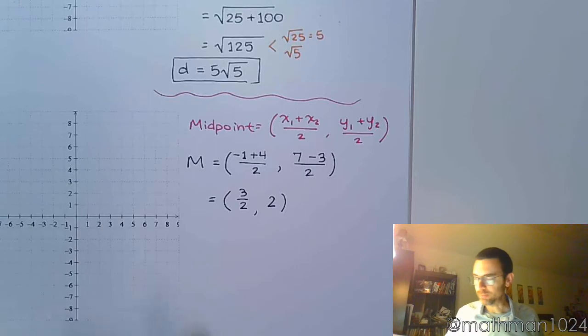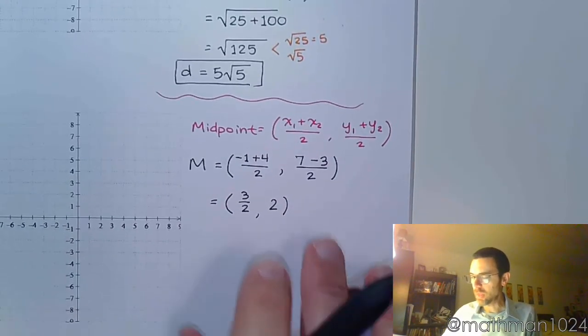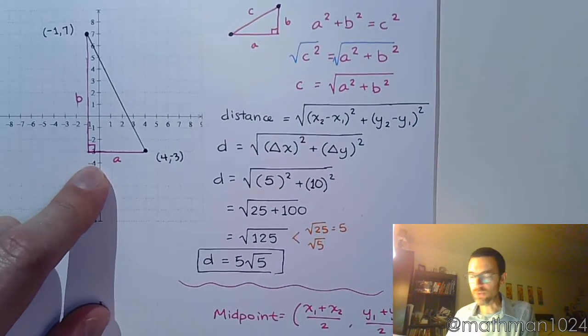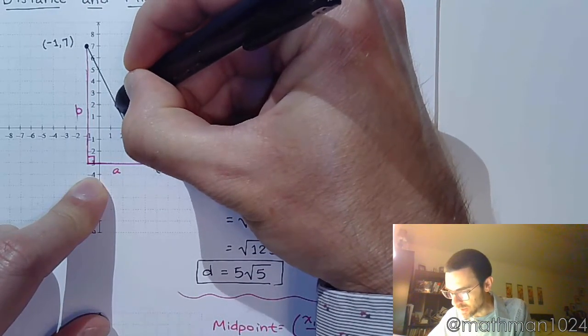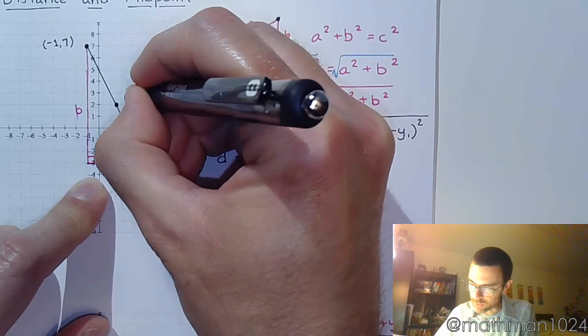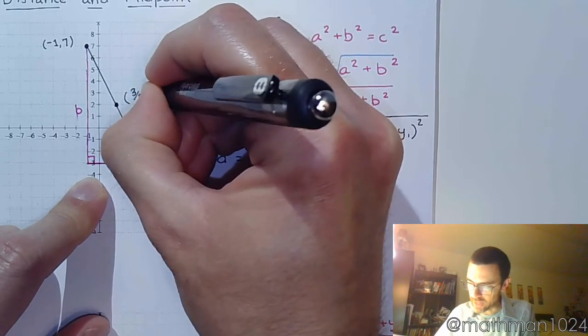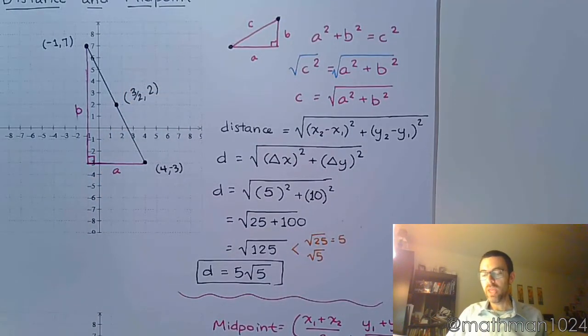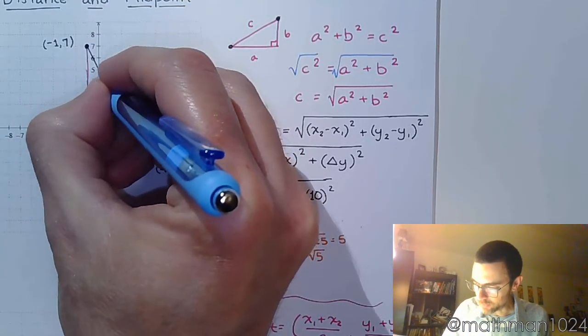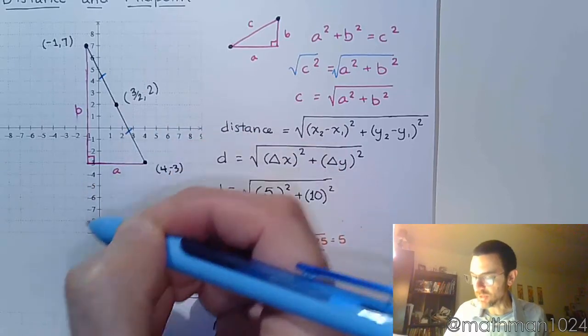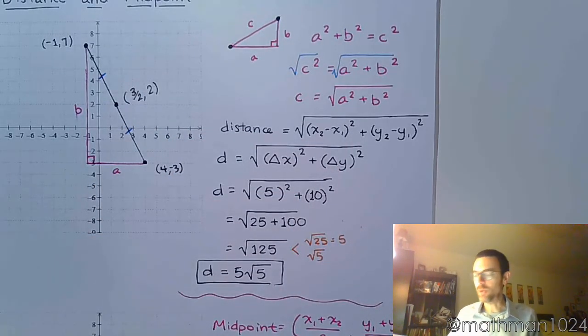And if you look back at the picture, 3 halves, 2, we'll see 3 halves is 1 and a half, and 2 is this guy right here. So this is the ordered pair 3 halves, 2, which is your midpoint. And what we're saying here with that midpoint is that the distance here is going to be the same as the distance between those two points. So that's your midpoint.